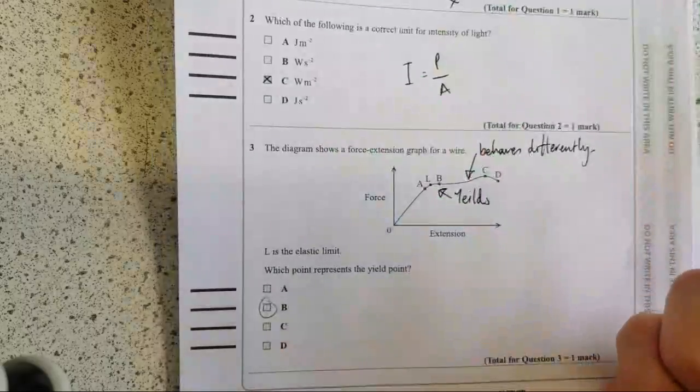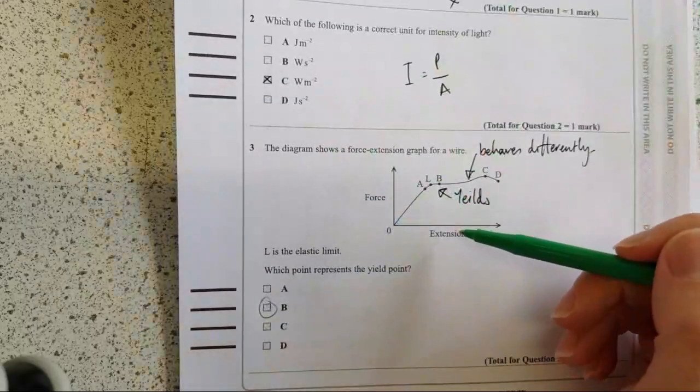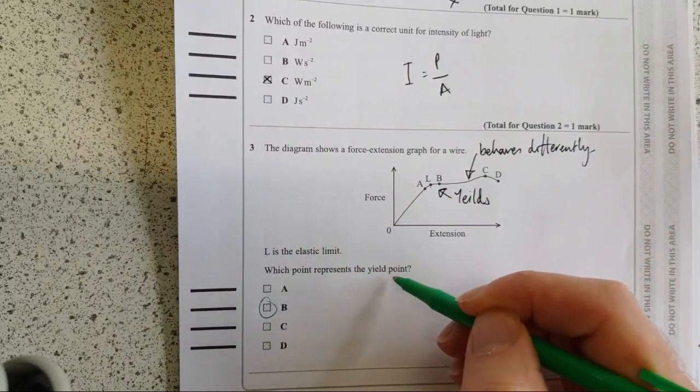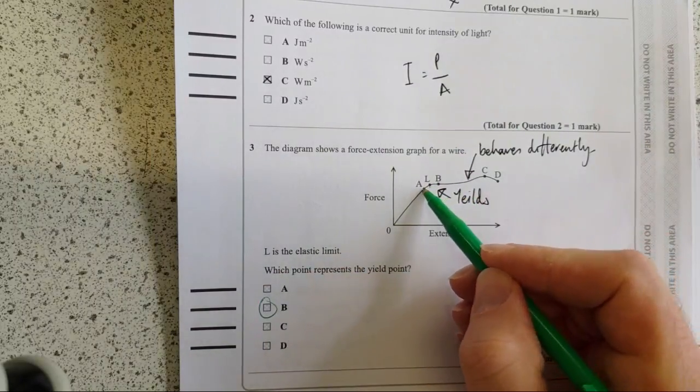The diagram is a force extension graph. So this force extension graph, we don't need to know much about it, but we need to know L is the elastic limit and which point represents the yield point. This is the limit of proportionality. Elastic limit, this is the yield point B.